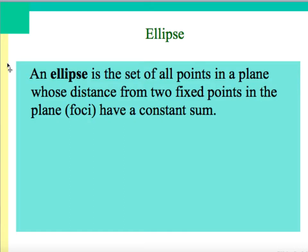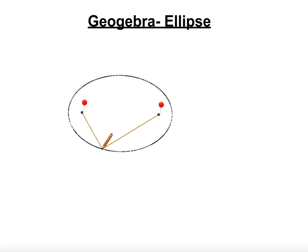Going back to our definition of the ellipse: it's a set of all points in the plane whose distance from two fixed points in the plane, known as the foci, has a constant sum. That constant sum is the important part for us to keep track of. We were able to create that nicely using the GeoGebra app to see how it's created with a constant sum and look at a couple different variations.